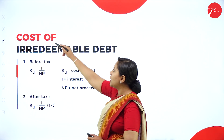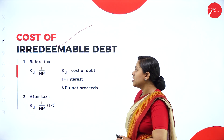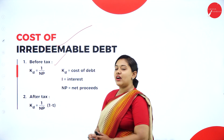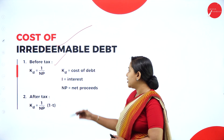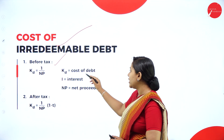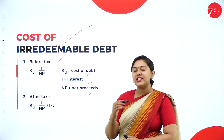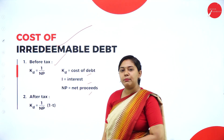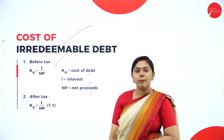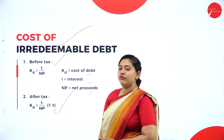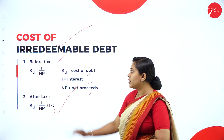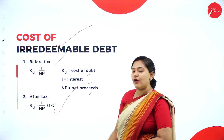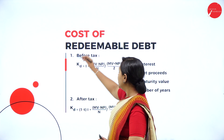The formula for cost of irredeemable debt before tax is: Interest divided by Net Proceeds. The after-tax formula is: Interest divided by Net Proceeds, multiplied by (1 minus tax). These are the formulas for irredeemable debt before tax and after tax.